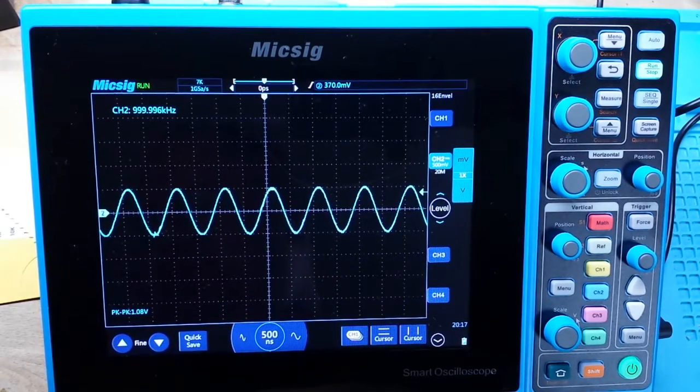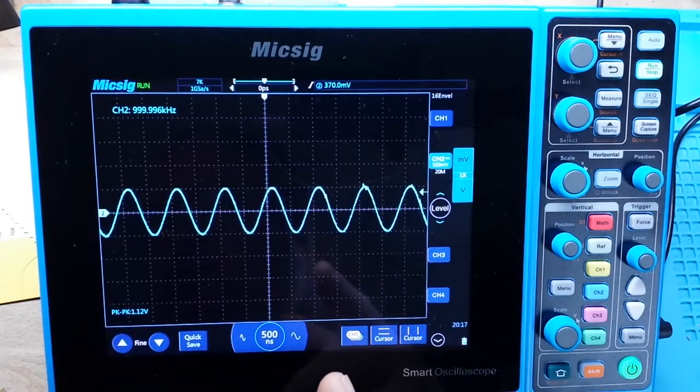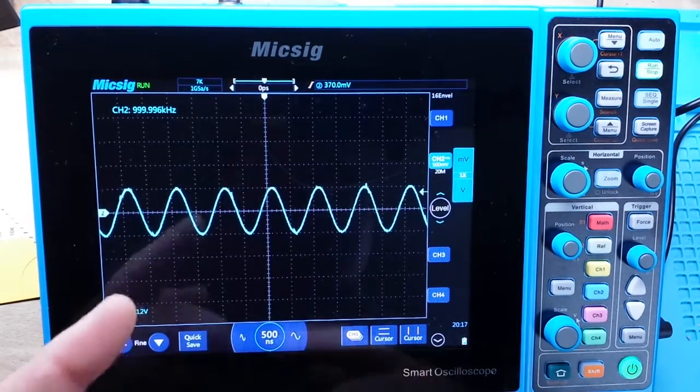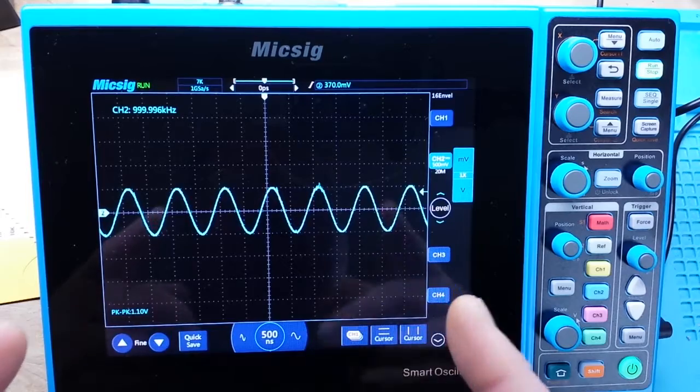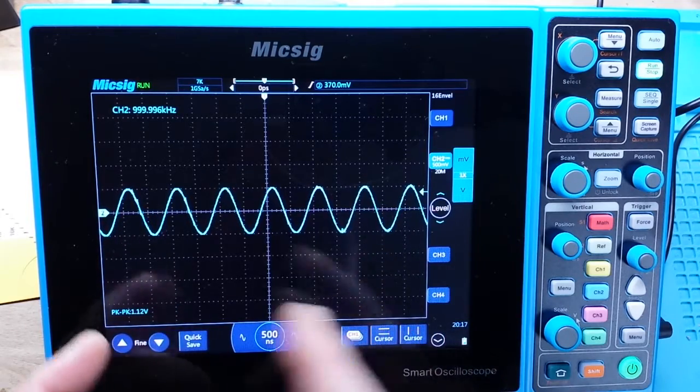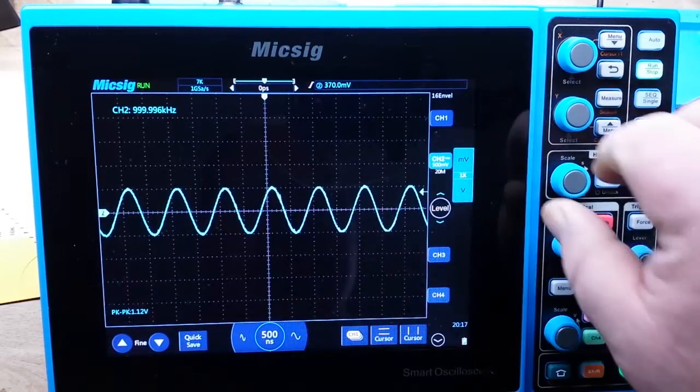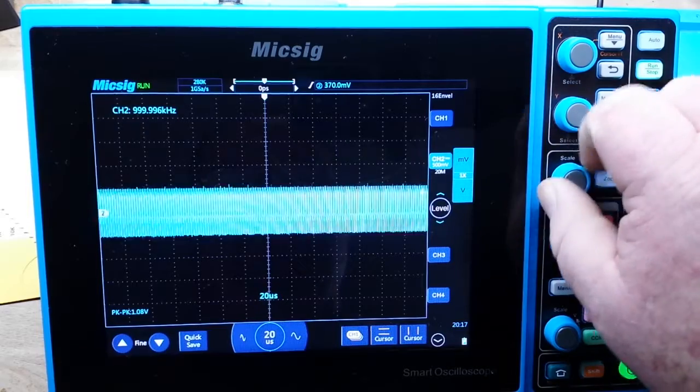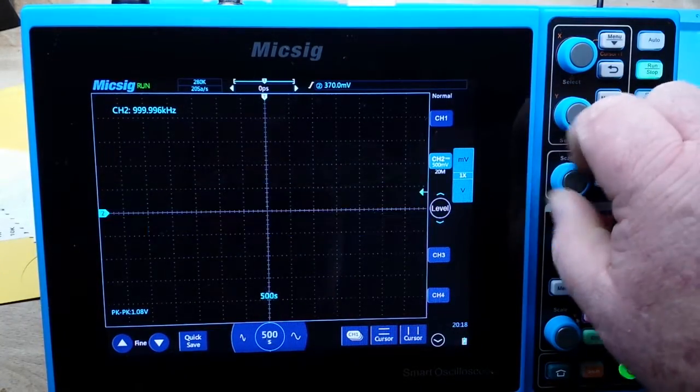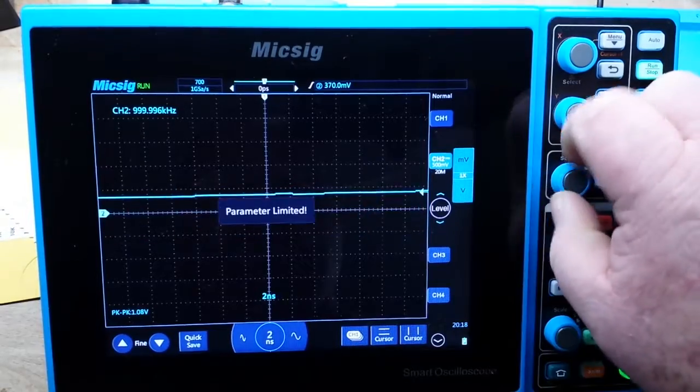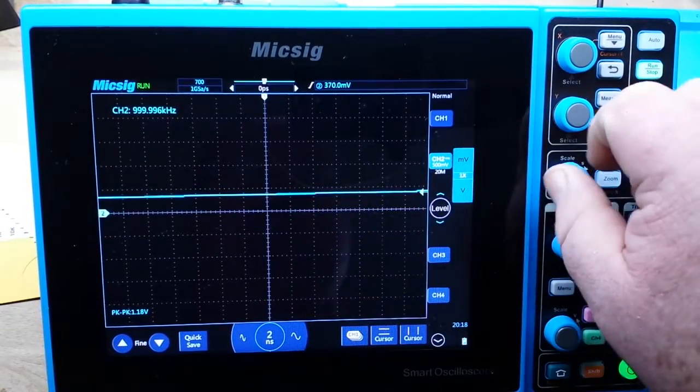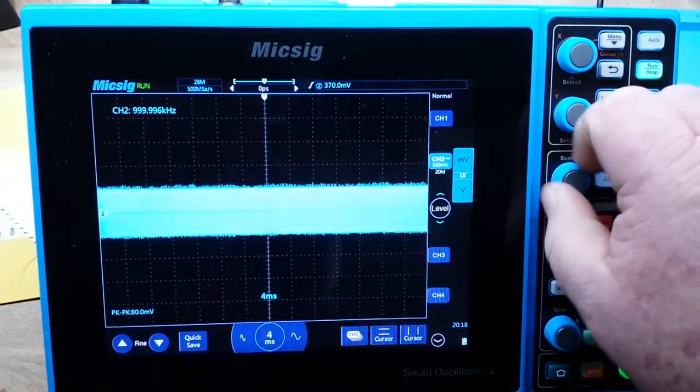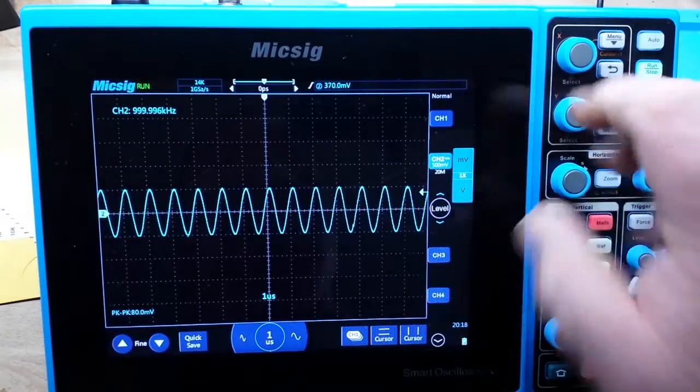One thing it does do is it runs the ADC in a very fast mode. So a downside to that is if you run this with a super fast sweep speed, if you're running as fast as you can go, you're down to two nanoseconds, you are maxing out the ADC, so you're not going to actually get the full effect of it.